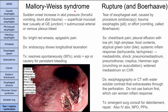Next, let's talk about esophageal tears, ruptures, and perforations. First is Mallory-Weiss syndrome, caused by a sudden increase in abdominal pressure — such as forceful vomiting or blunt abdominal trauma — which causes superficial mucosal tears, usually at the gastroesophageal junction, with submucosal artery or venous plexus bleeds. Symptoms are bright red emesis and epigastric pain. Endoscopy shows longitudinal lacerations that are only as deep as the mucosa. These usually resolve spontaneously; if not, endoscopy with epinephrine injection and cauterization can be performed.